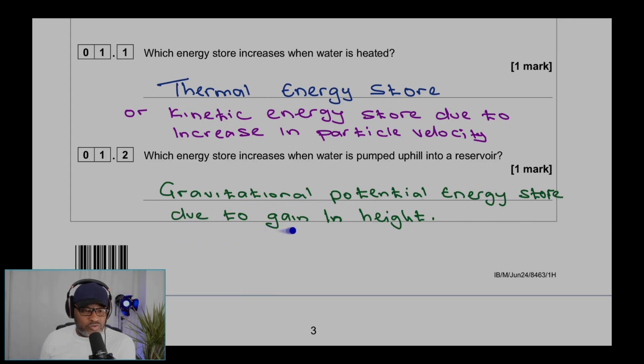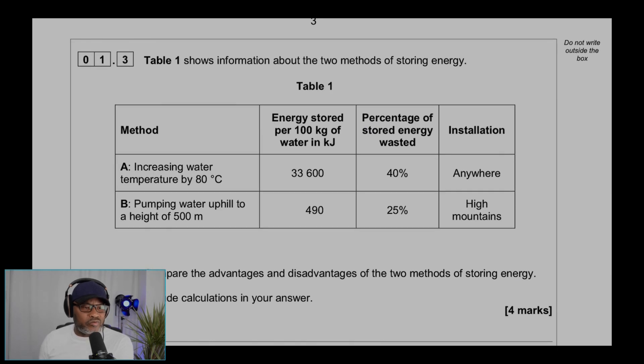Question 1.3: We're given a table that shows information about the two methods of storing energy. Method A, increasing water temperature by 80 degrees Celsius; Method B, pumping water uphill to a height of 500 meters. Energy stored per 100 kilograms of water in kilojoules is 33,600 with A and 490 with B.